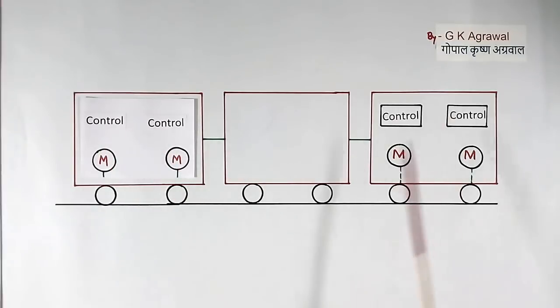Then using control, we can set different value here and here. This means power will be different for different bogies or engines. This way, power and tractive force available can be used more properly in case of AC motors along with IGBT-based control system.